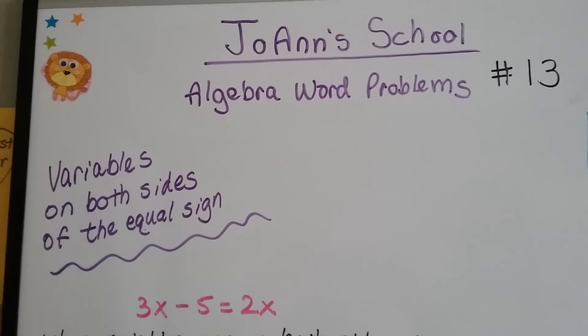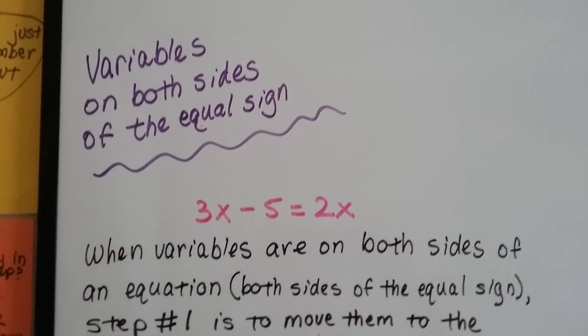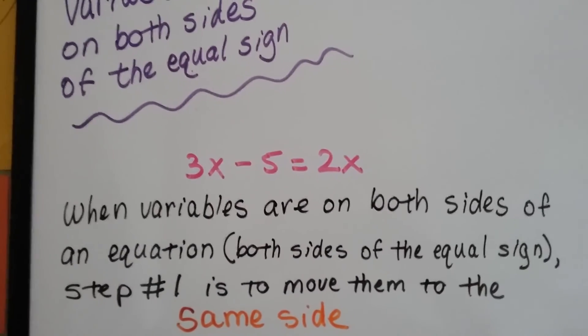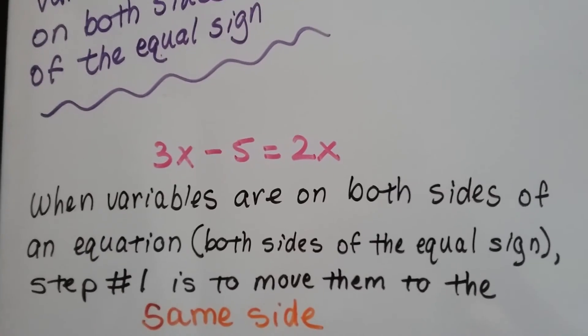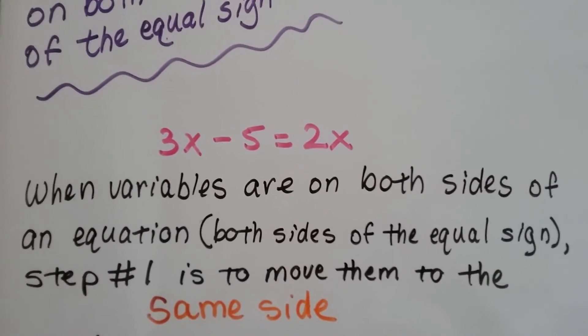Algebra word problems number 13, variables on both sides of the equal sign. Sometimes when we're trying to solve word problems, our equation will come out that there's variables on each side of the equal sign. Well, don't doubt yourself. You didn't make a mistake. They come out that way sometimes.